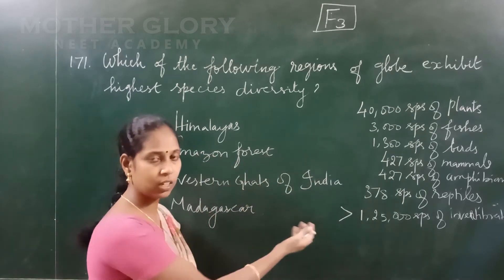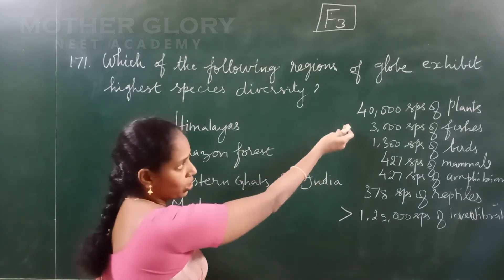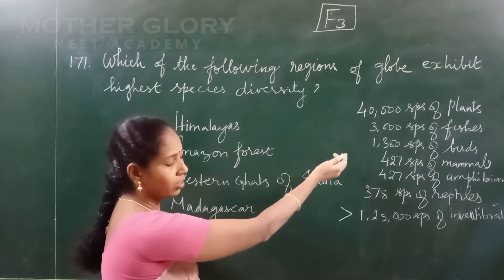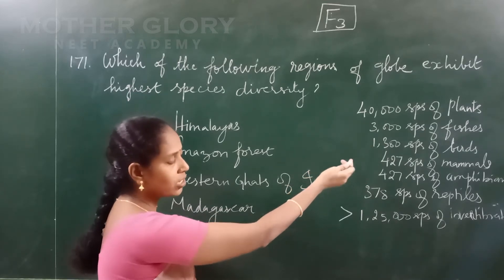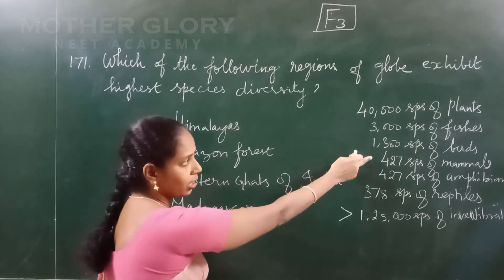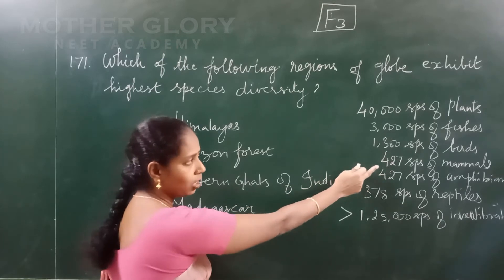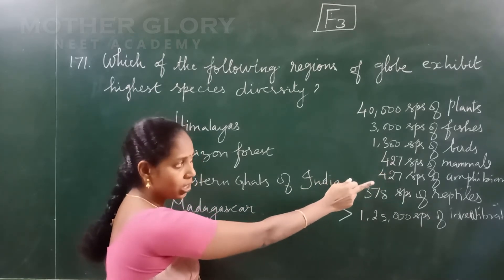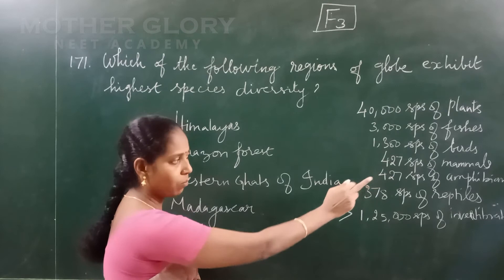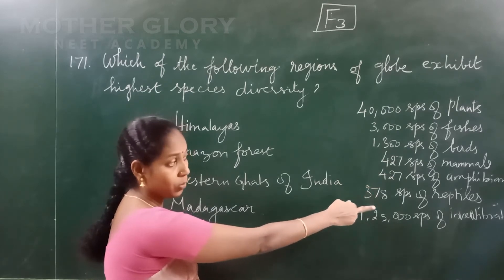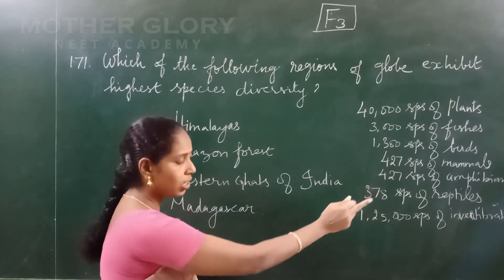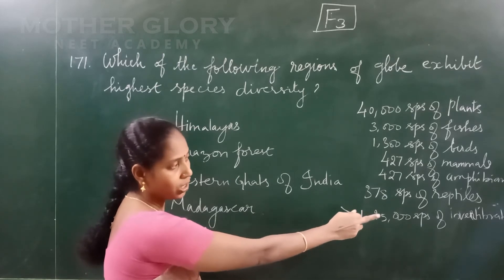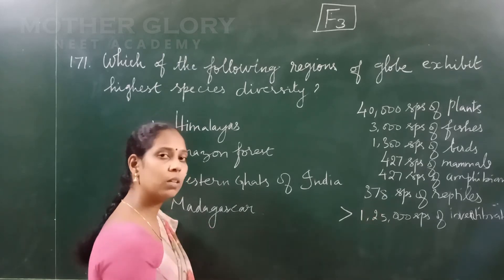Amazon forest has special species richness: 3,000 species of fishes, 1,300 species of birds, 427 species of mammals, 427 species of amphibians, 378 species of reptiles, and more than 125,000 species of invertebrates.